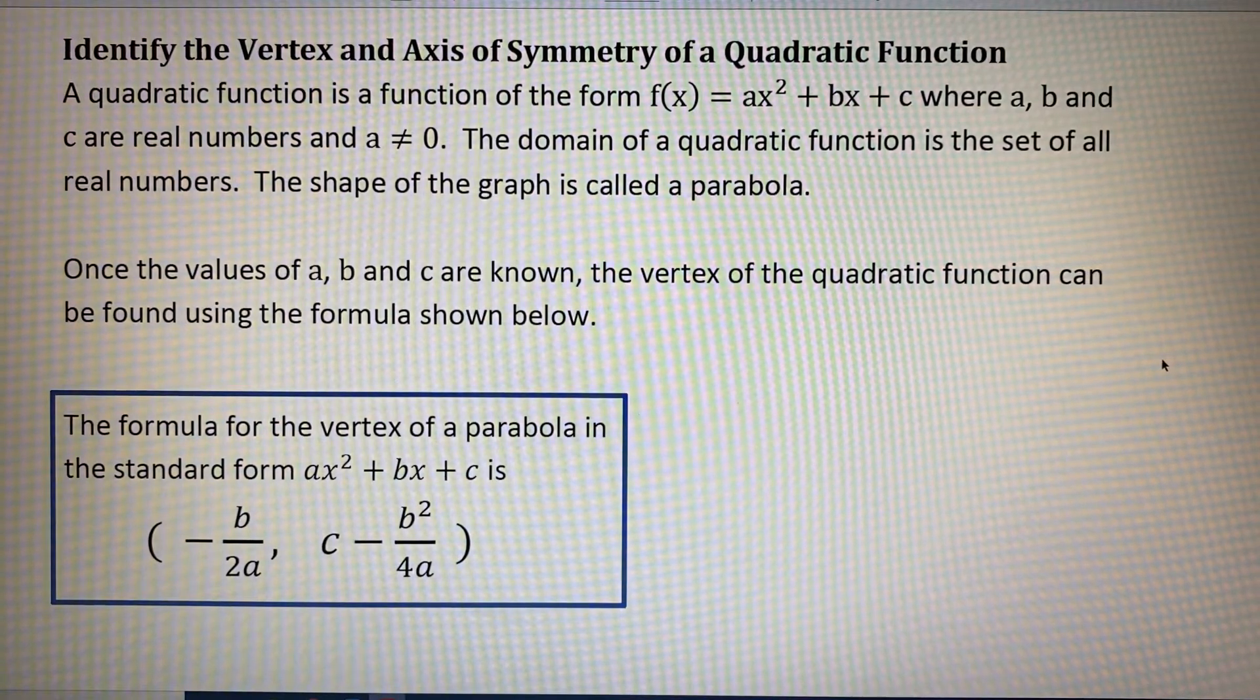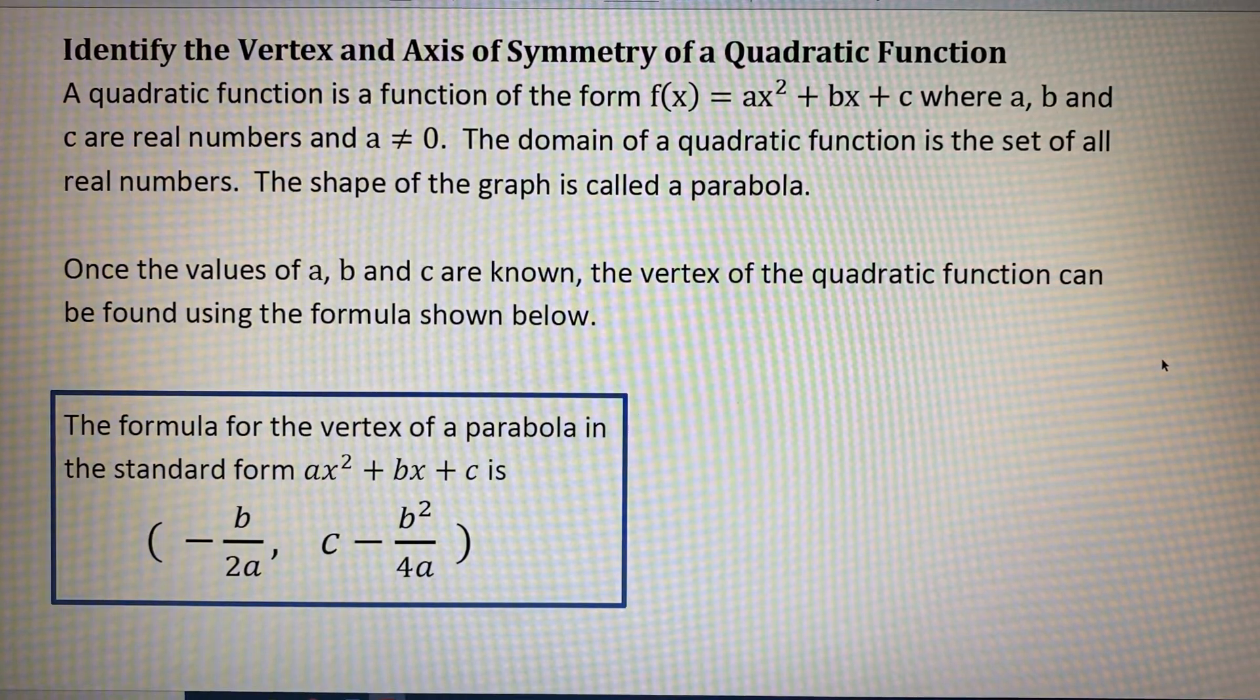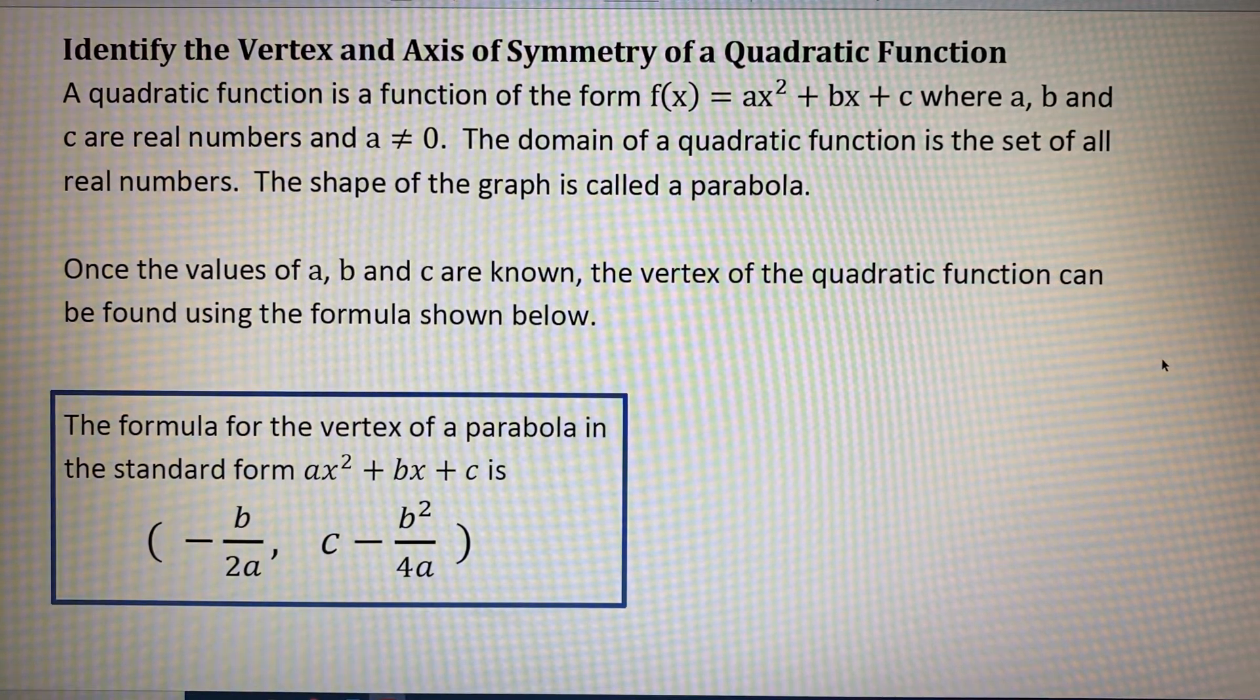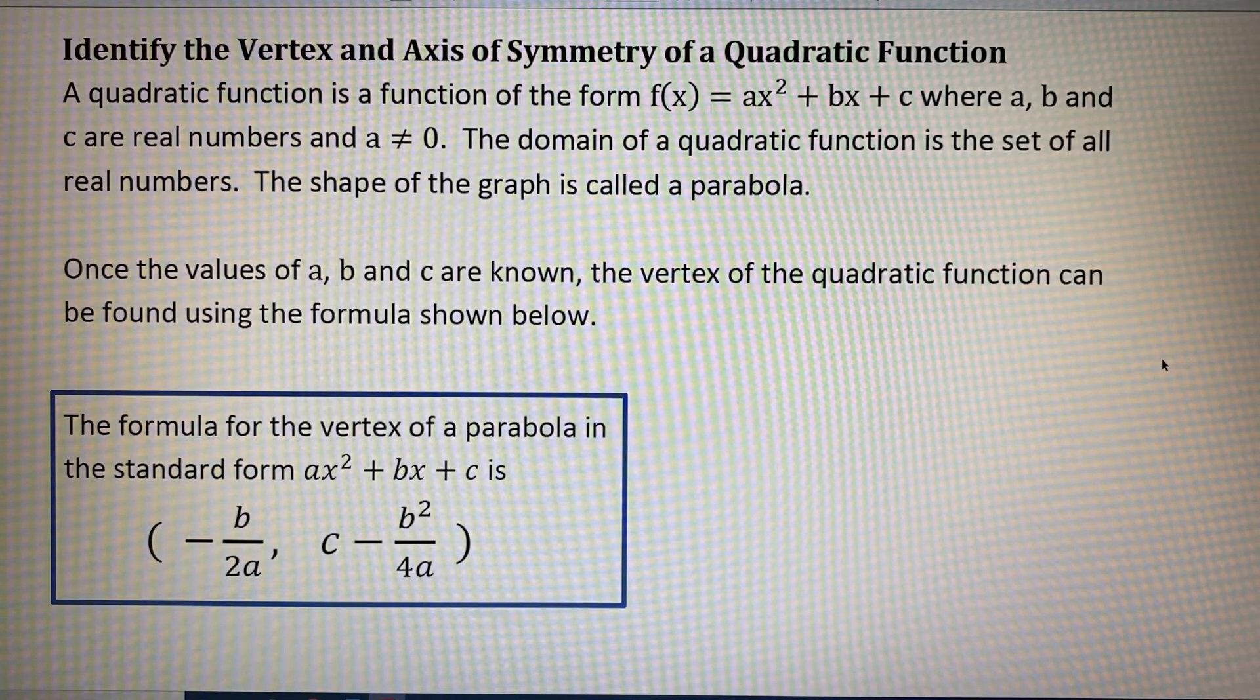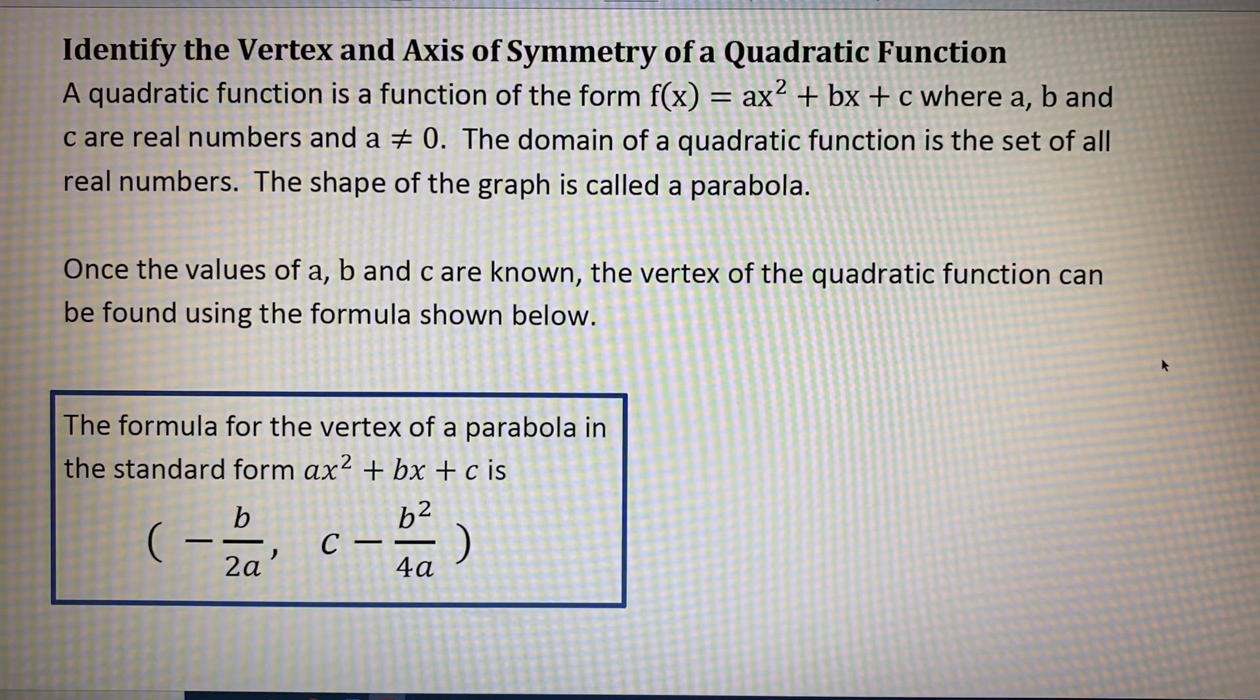The formula for the vertex of a parabola in the standard form ax squared plus bx plus c is negative b over 2a for the x coordinate, c subtract the fraction b squared over 4a for the y coordinate.